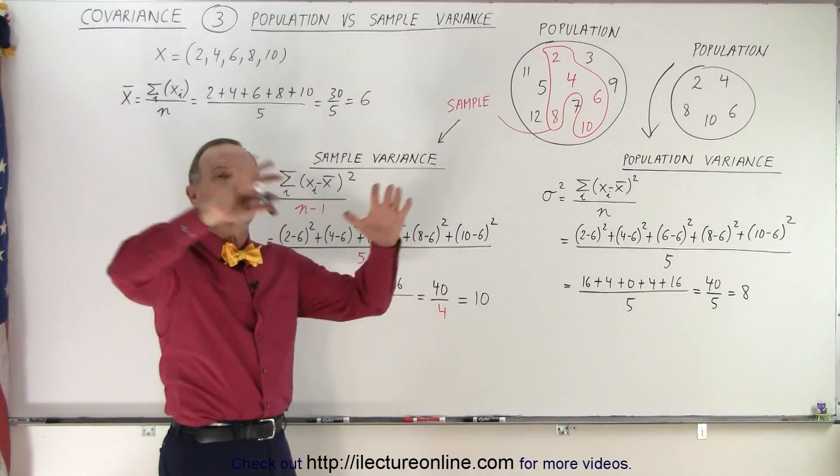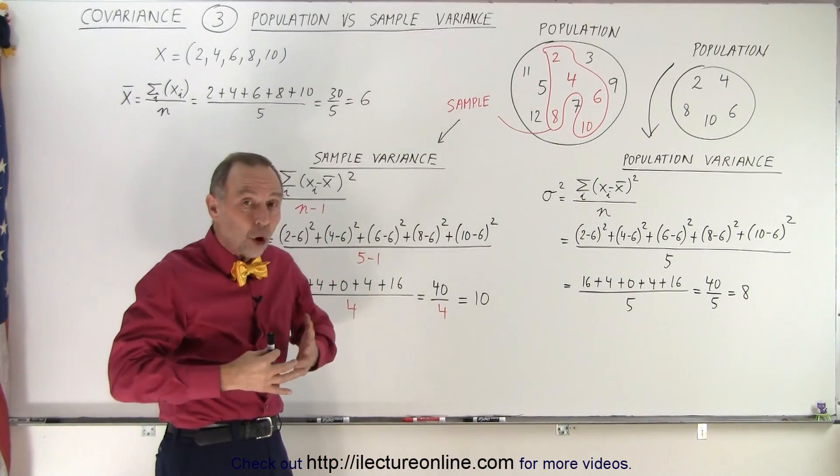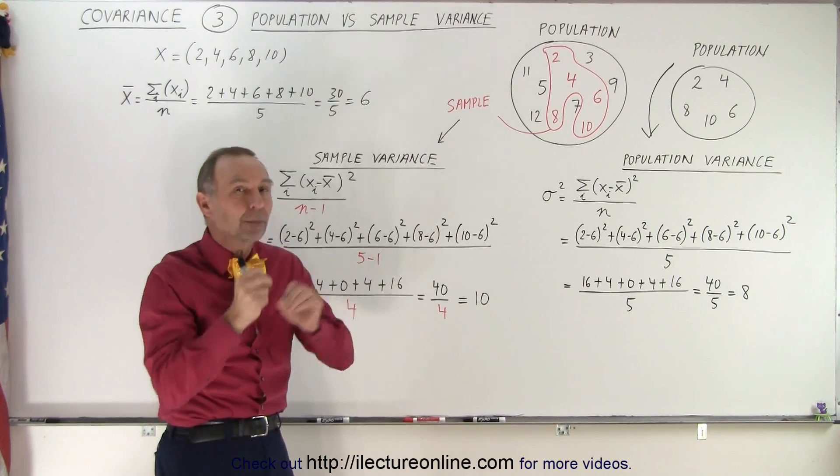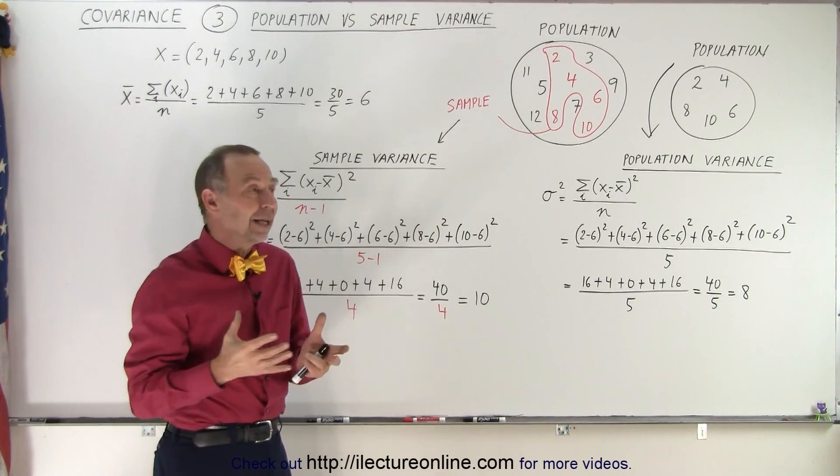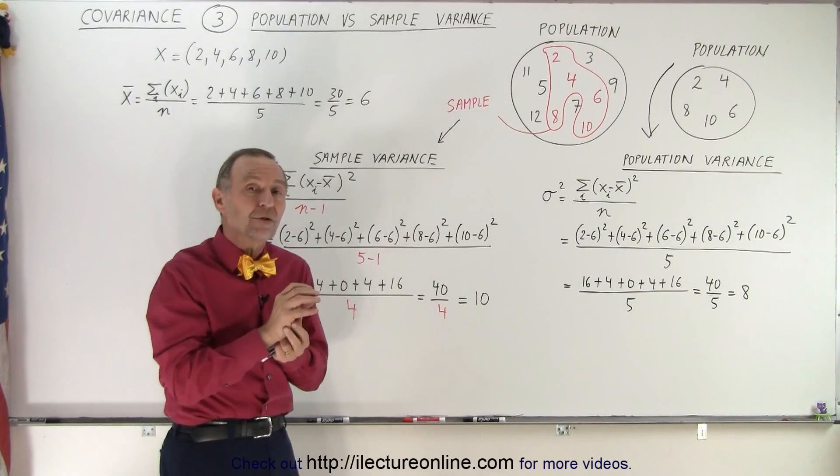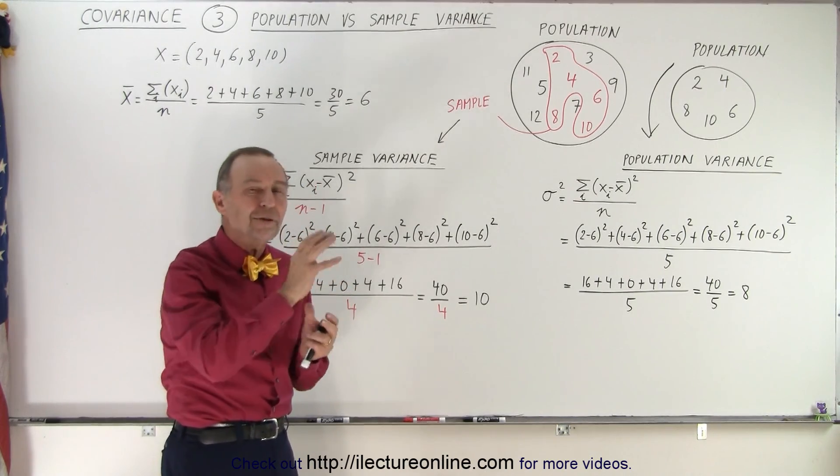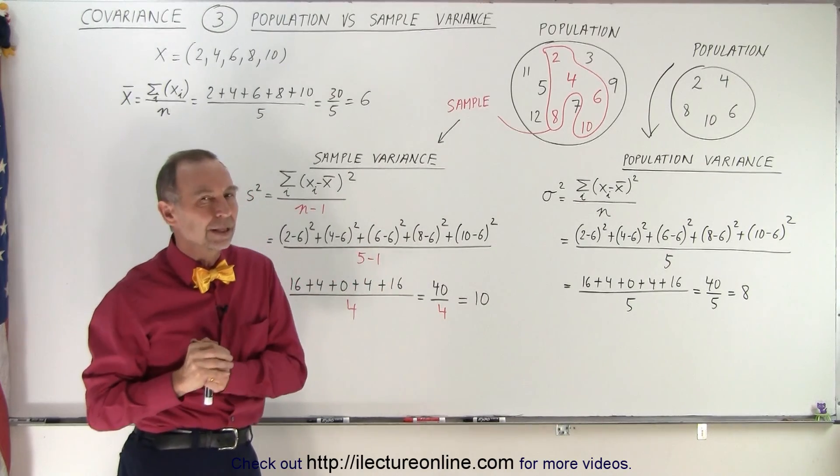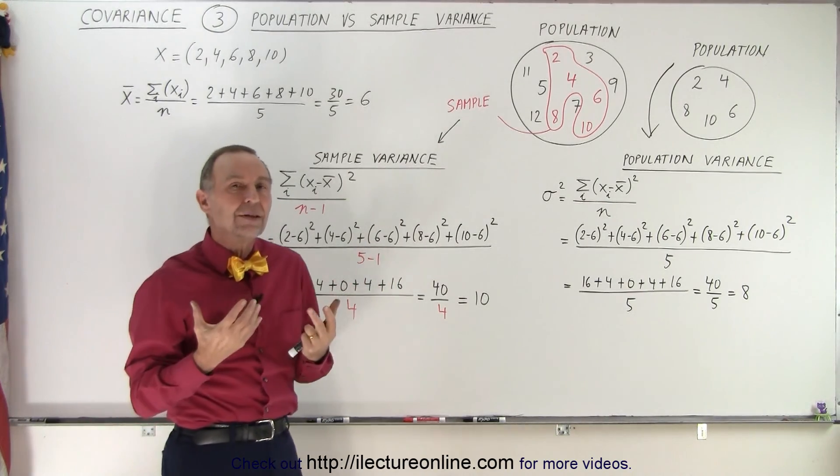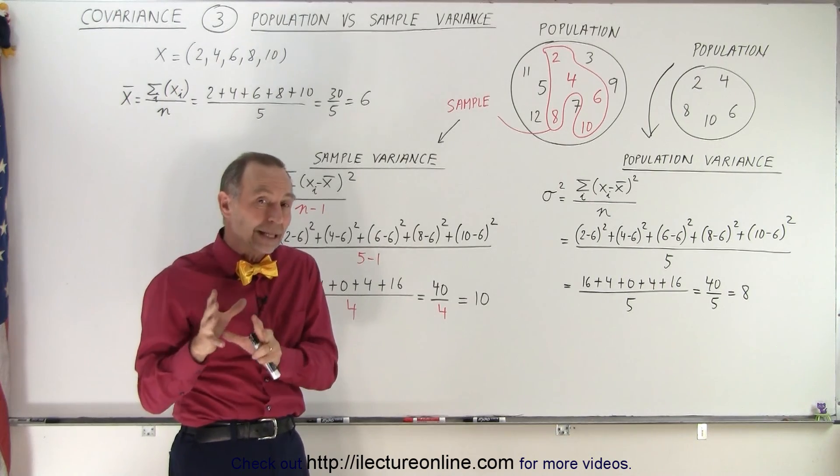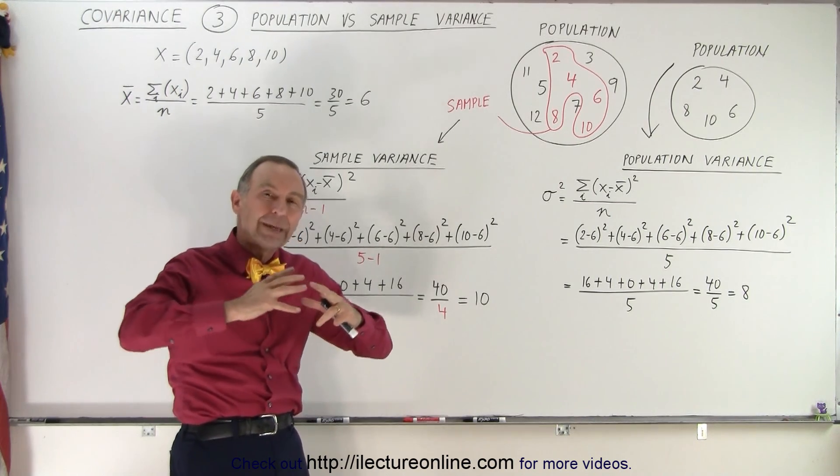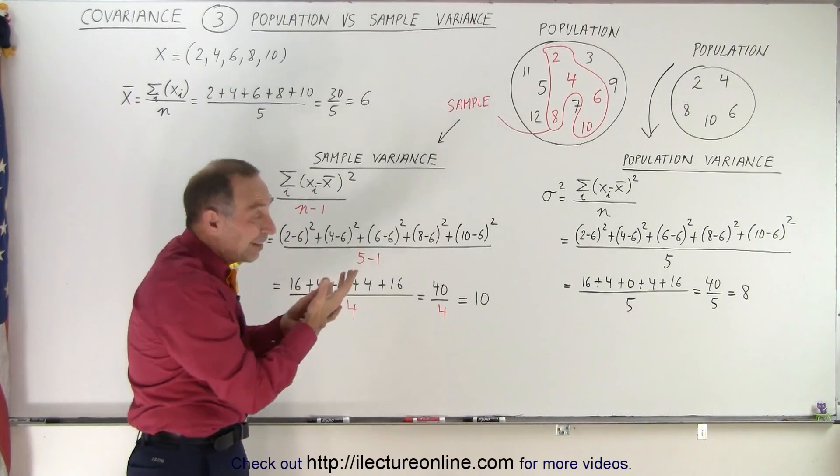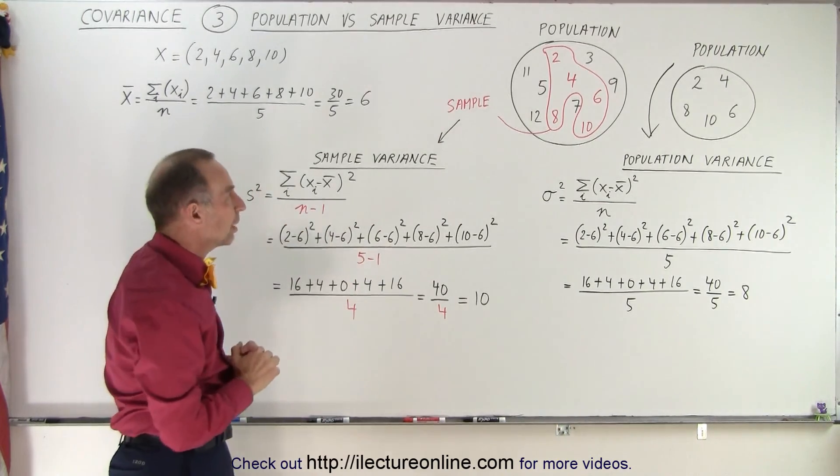But what if we have a large population, and we don't want to use all of the numbers in our data set. So let's say we pick random numbers. Now, if we do that, it's very likely that the random numbers are fairly representative of the overall population. But not necessarily. So what we need to do is we need to account for that. So the number that we're going to calculate for the variance is going to end up being a little bit larger, because the sample doesn't necessarily represent truly the whole population.